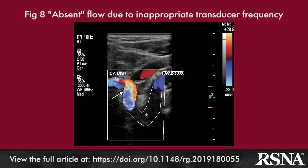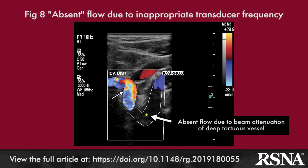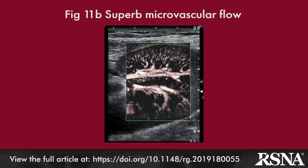Choosing a transducer of appropriate low frequency allows for adequate assessment of deep vessels. Similarly, deep positioning or too small of a color box can have a negative effect on blood flow detection. Some innovative vascular ultrasound techniques for the detection of flow include B-flow, micro flow imaging, superb microvascular imaging, and of course contrast-enhanced ultrasound.